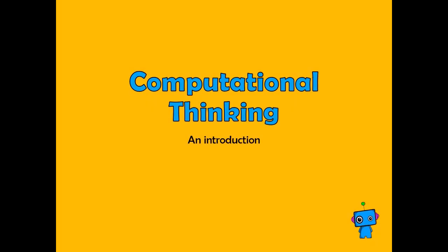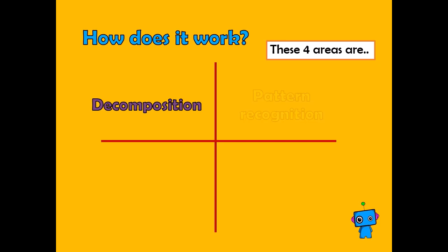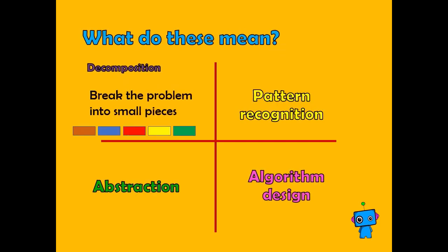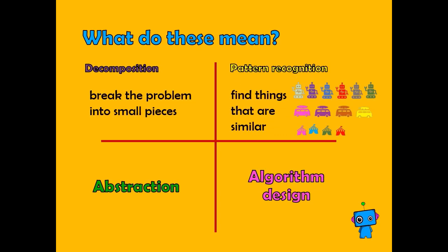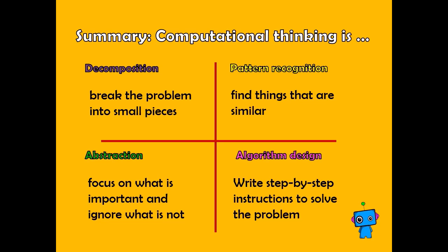Welcome back to an introduction to computational thinking. If you remember, there were four elements to computational thinking. These elements broke the problem into small pieces, found similarities, focused on the important, and wrote step-by-step instructions.